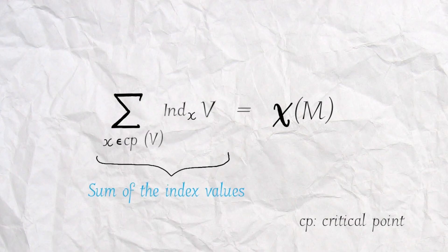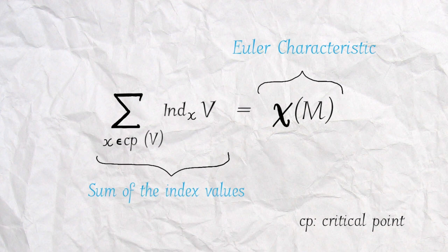This formula sums up the discussion so far. It shows the sum of the indices of a vector field at the critical points and its equivalence with the Euler characteristic of the manifold M. This is called the Poincaré-Hopf theorem.